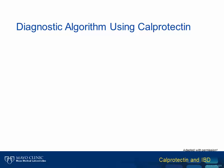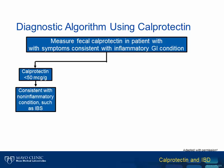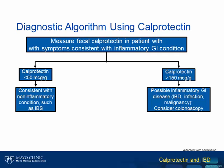Despite the issue with specificity, the high sensitivity of this test has led some to propose a diagnostic algorithm that incorporates calprotectin. The algorithm starts by measuring fecal calprotectin in a patient who has symptoms consistent with an inflammatory GI condition. In this algorithm, a fecal calprotectin result less than 50 micrograms per gram would be more consistent with a non-inflammatory condition such as IBS. In comparison, a calprotectin result greater than 150 micrograms per gram would be consistent with an inflammatory GI disease, which might include IBD, infection, or malignancy. For these patients, further evaluation including endoscopy or colonoscopy might be considered.